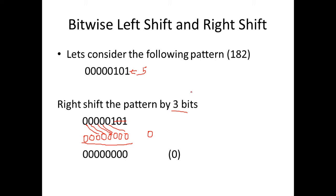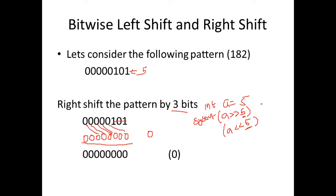You can verify this in any programming language. For instance, in Java, if you declare int a equal to 5 and then print it with a right shift notation using the number of bits to shift, that gives the result. For a right shift by 3 bits, you use the right shift operator with 3, and when you run this your output is going to be 0. You can verify this yourself.